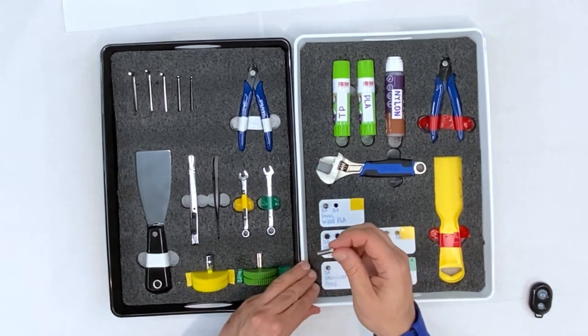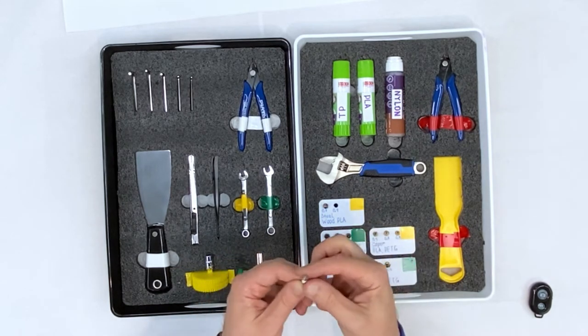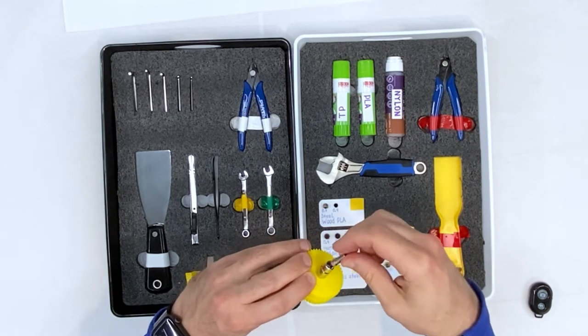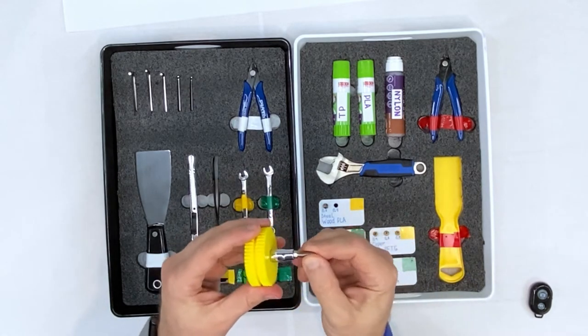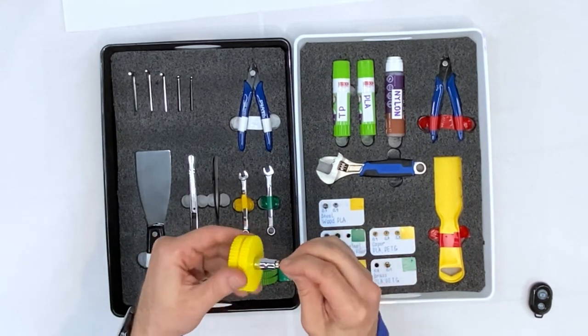But this is not only what I use this color coding for. It helps me to find the proper tool for the work. What nut driver size should I use for this printer nozzle? When I see the yellow marker on the nozzle label, I know I have to use the yellow nut driver or wrench.